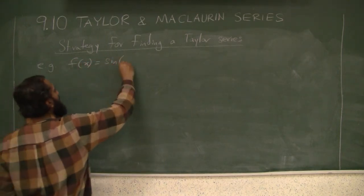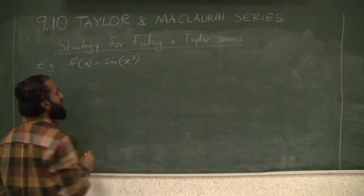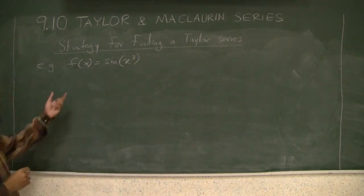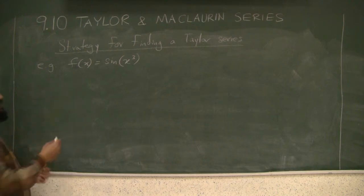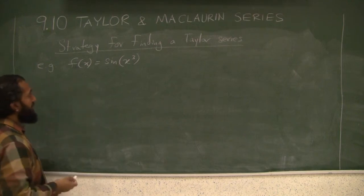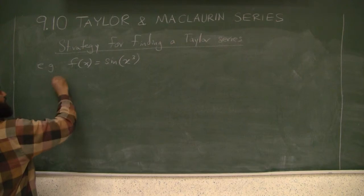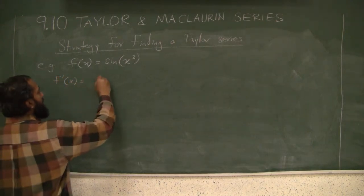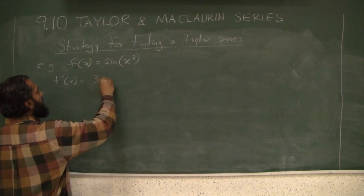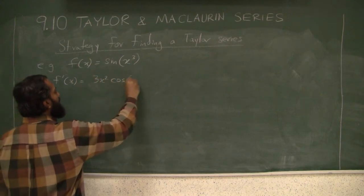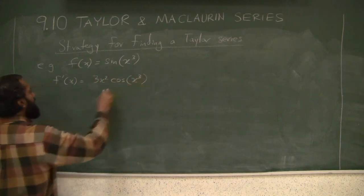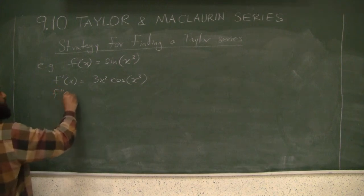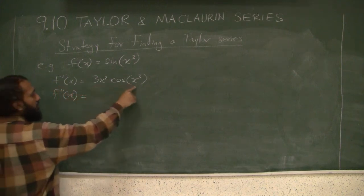If you started using this previous guideline strategy, what will be the first derivative? The first derivative is 3x²cos(x³). Second derivative: now I have to use product rule.